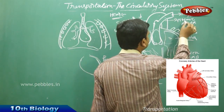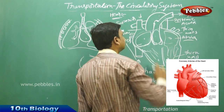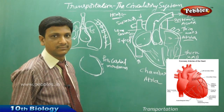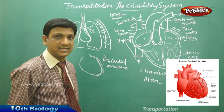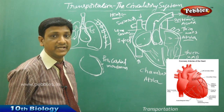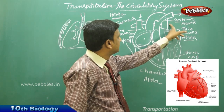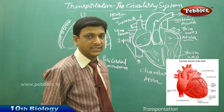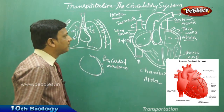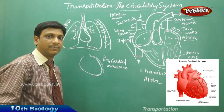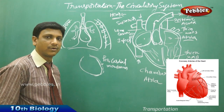The systemic aorta is a very large, ring-like vessel. Its function is to supply oxygenated blood to various parts of the body. The pulmonary artery is also visible here — it pumps blood to the lungs for oxygenation.